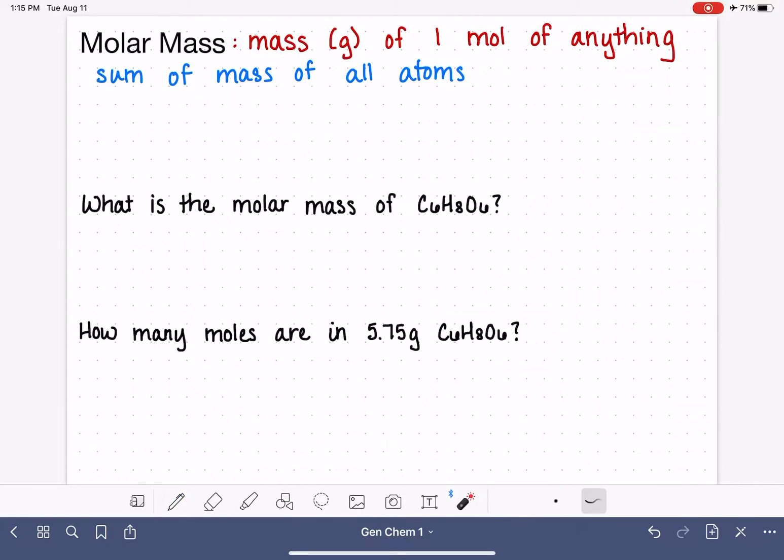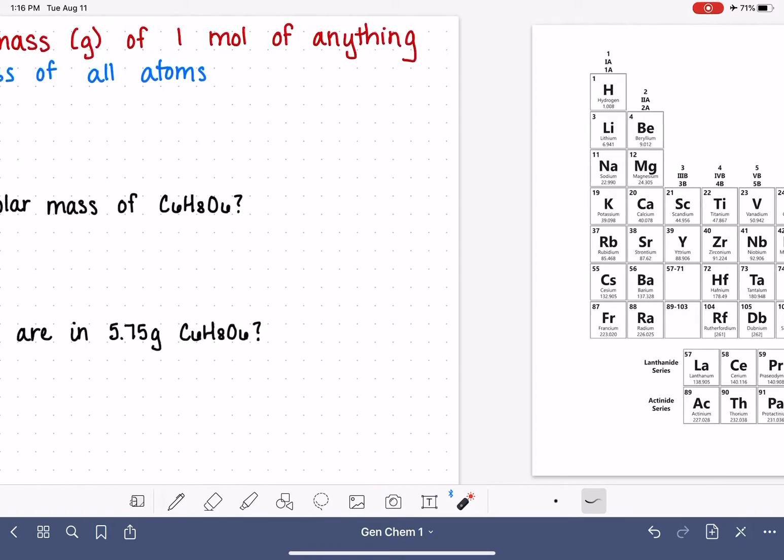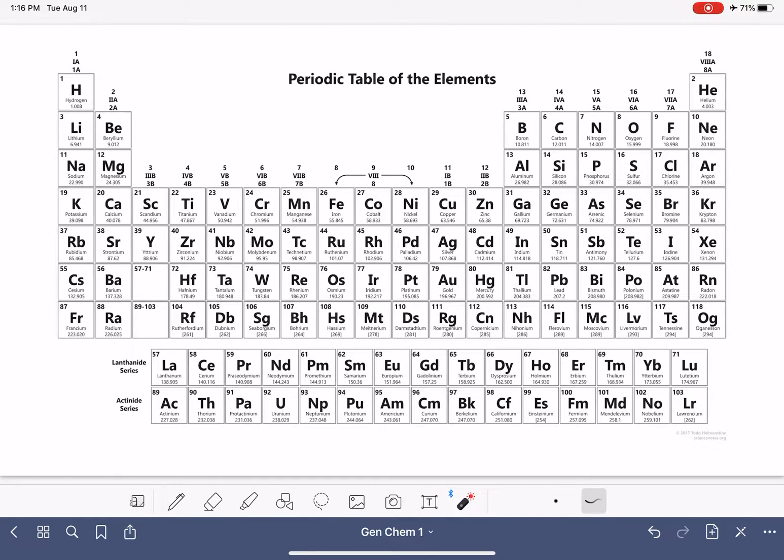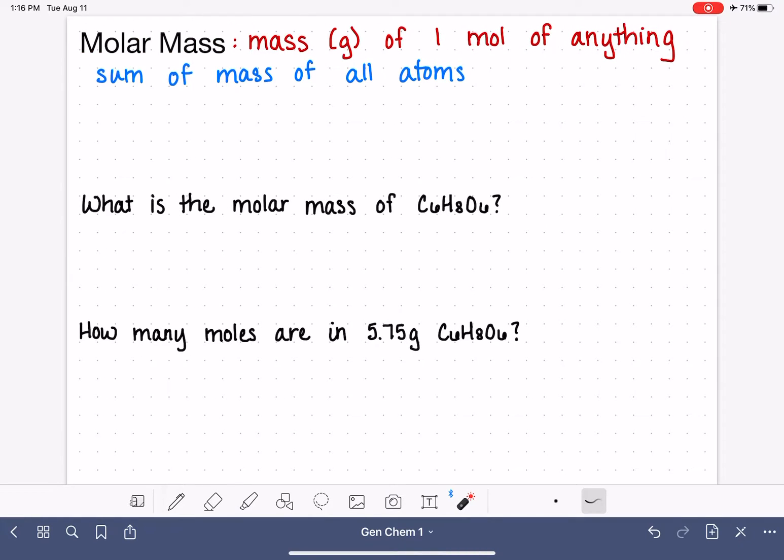These masses that we use to calculate the molar mass come from the periodic table. If we slide over to a periodic table, these atomic masses are the numbers we use when calculating the molar mass for a molecule or compound.